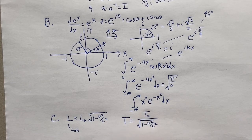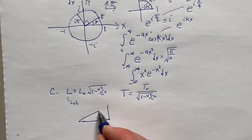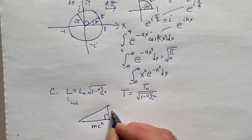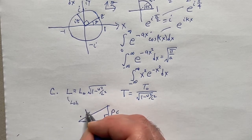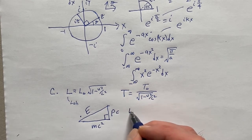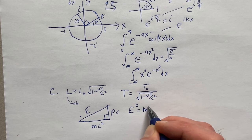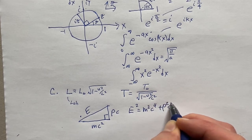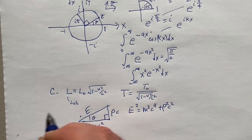Here's a nice diagram we've seen more than once: if you have a right triangle where one side is mc² and the other is pc, that gives you the relationship for energy in special relativity. E squared equals m²c⁴ plus p²c² — this is a good one to know. The angle in that triangle relates to the speed.